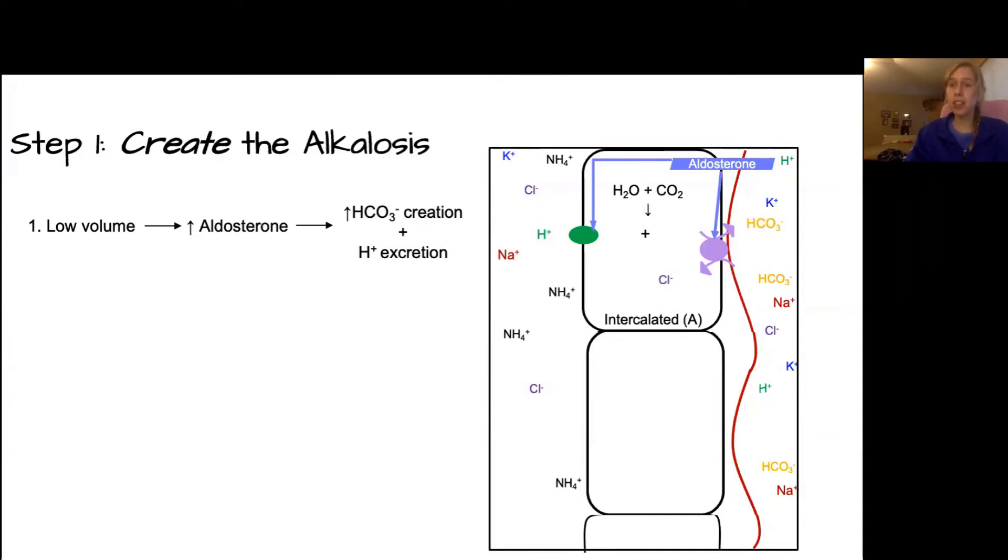But there's another type of intercalated cell to be aware of. This is the intercalated type B cell, and it's very similar, but its function is more regulatory and compensatory, so its functions are essentially flipped from the intercalated type A cell. It will pump hydrogen into the blood and bicarbonate into the lumen. The intercalated B cell is one of the main ways that our body is able to compensate for an alkalosis by excreting extra bicarbonate.